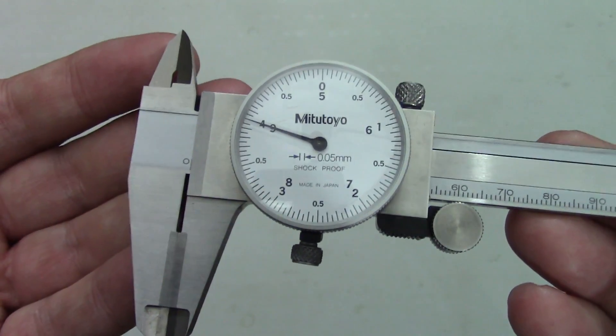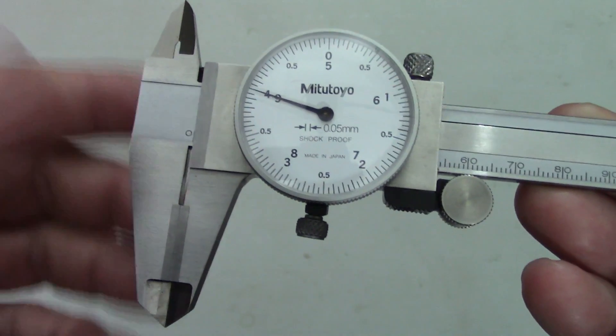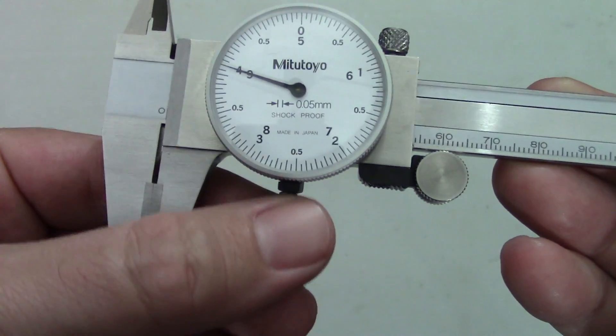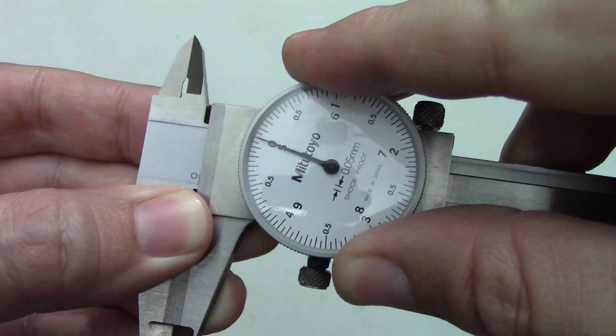If the dial still doesn't read zero, you can adjust the dial itself. The bezel has a clamp to hold it in place, and loosening this thumb screw allows you to turn it so that zero on the dial lines up with the needle.